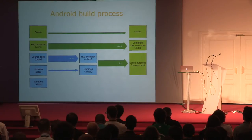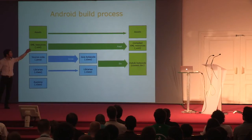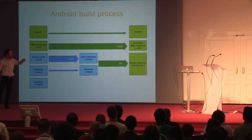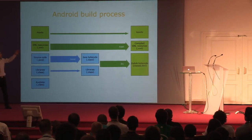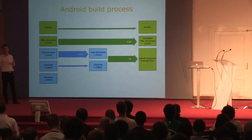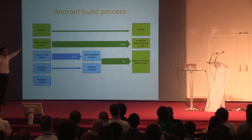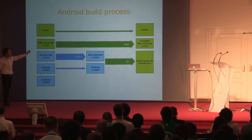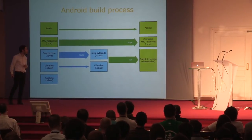All of that is processed in the build process to a final APK file. That APK file contains the assets—they're just copied over—and it contains compiled XML resource files. What you write is a text format, but when it's compiled it becomes a binary XML format.